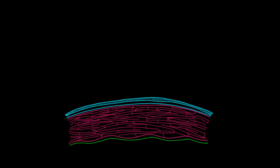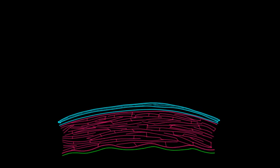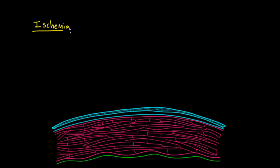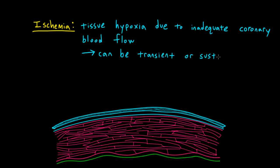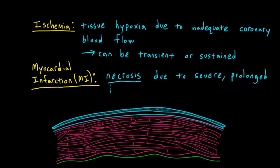Now let's talk more about ischemia and infarction, starting with some basic definitions. The word ischemia refers to tissue hypoxia due to inadequate coronary blood flow. This can be transient, for example in a patient with chronic stable angina induced by exercise and relieved by rest, or it can be more sustained. Myocardial infarction, or MI, indicates necrosis due to severe prolonged ischemia. The majority of MIs involve the left ventricle; however, inferior MIs can sometimes also involve the right ventricle, and MIs involving predominantly the right ventricle can also occur.